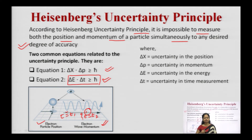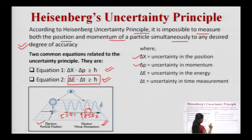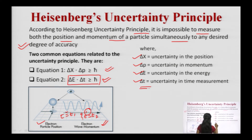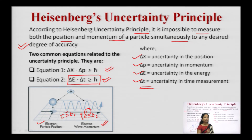The terms are as follows: Δx is the uncertainty in position, Δp is the uncertainty in momentum, ΔE is the uncertainty in energy — the exact energy value of the particle cannot be determined precisely — and Δt is the uncertainty in the time measurement. You must write both variants to score full marks.